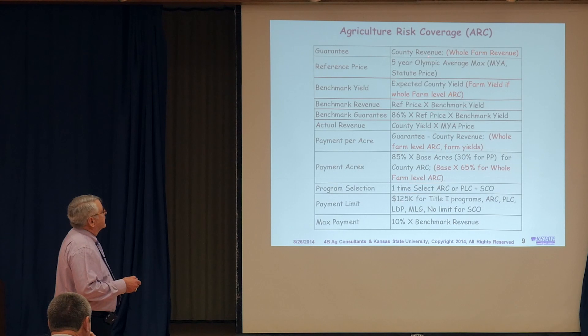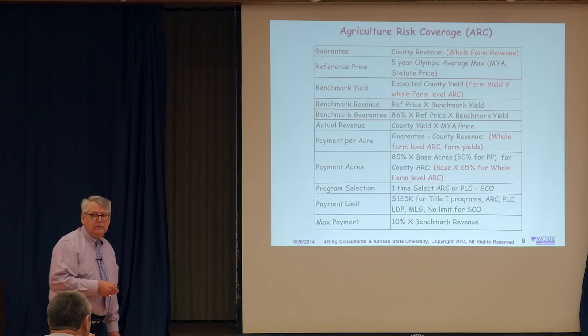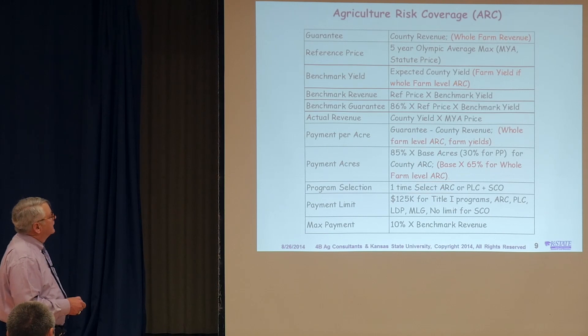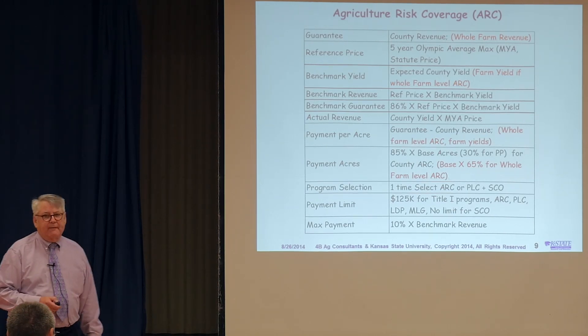The ARC program is either county or whole farm, using a five-year Olympic average price. We're coming off historical high prices for corn, so it makes this reference price very high relative to history. For that reason, a lot of the ARC payment is in the money right now. If you sign up for ARC, basically in most cases there's cash there — the only reason there wouldn't be is if the county yield is high enough to take you out of the claim.